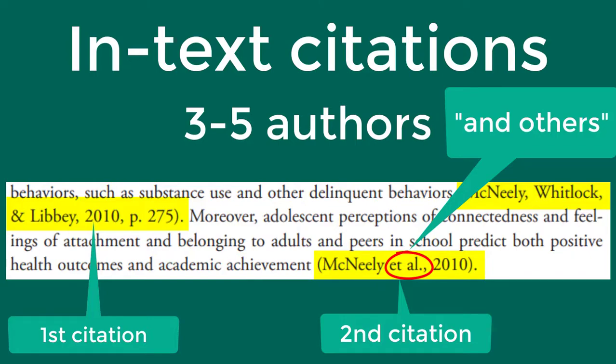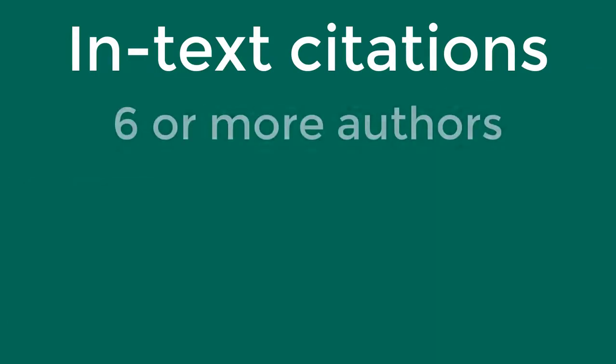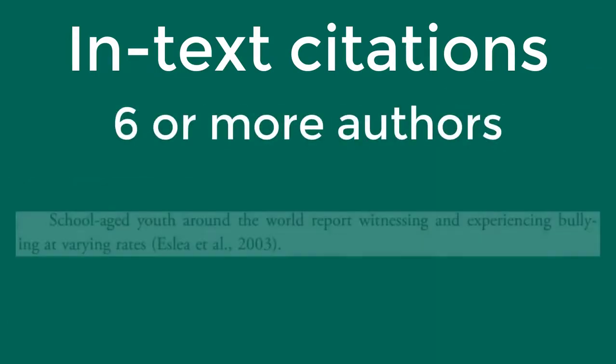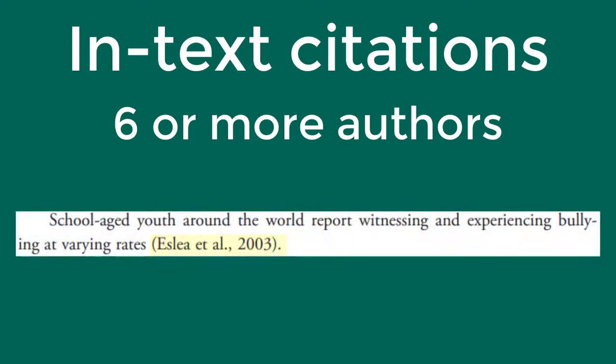If the material you are citing has six or more authors, you always use the first author's name, followed by et al., period, comma, then the year of publication.